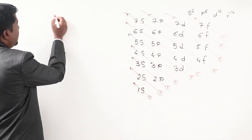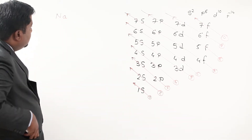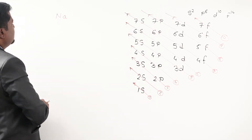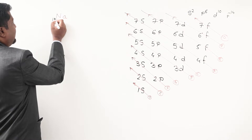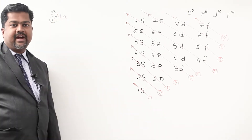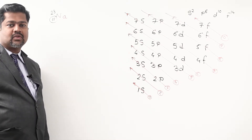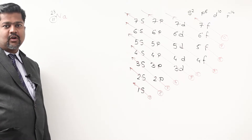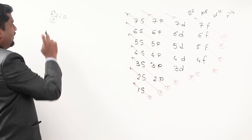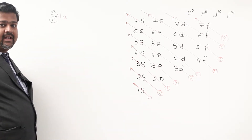First, I have to find out the electronic configuration of sodium. In case of sodium, atomic number is 11 and mass number is 23. For electronic configuration we have to focus only on the atomic number Z, which is 11. So there are 11 protons, and as 11 protons are there, there are 11 electrons.